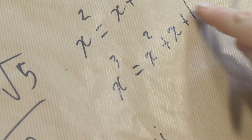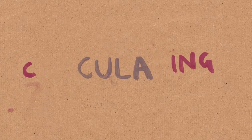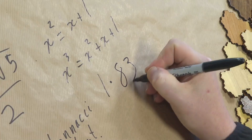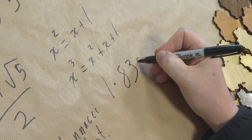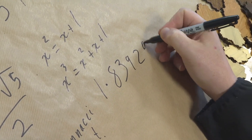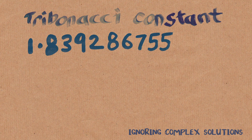And so that's a polynomial. Whilst I can reasonably solve quadratics, cubics are far messier to solve, so I want to get a calculator to do that. This gives us 1.83929 — and that's the Tribonacci constant.